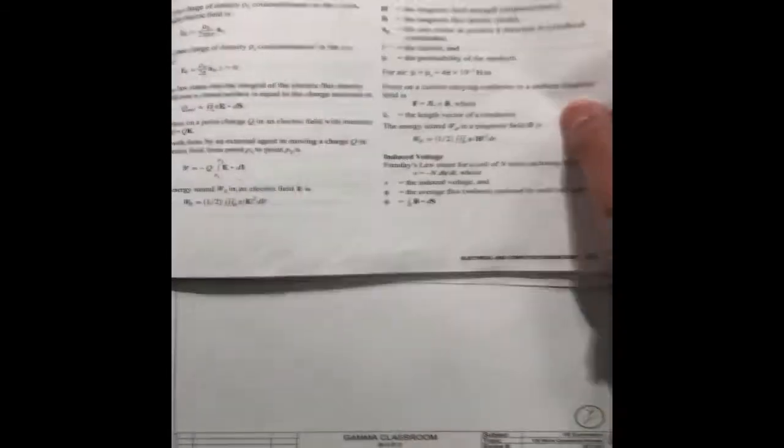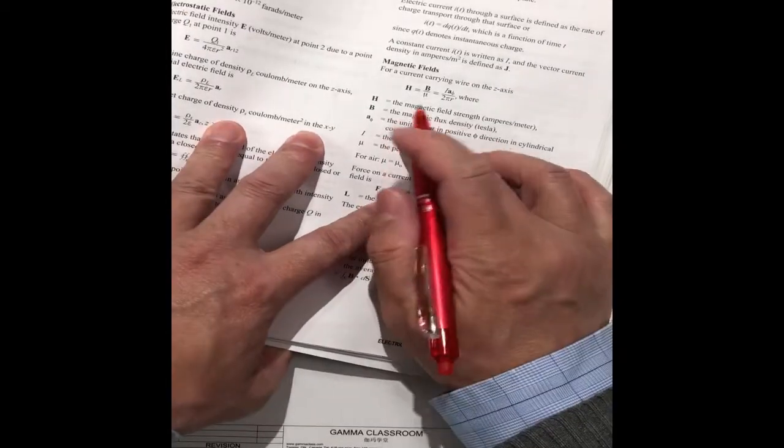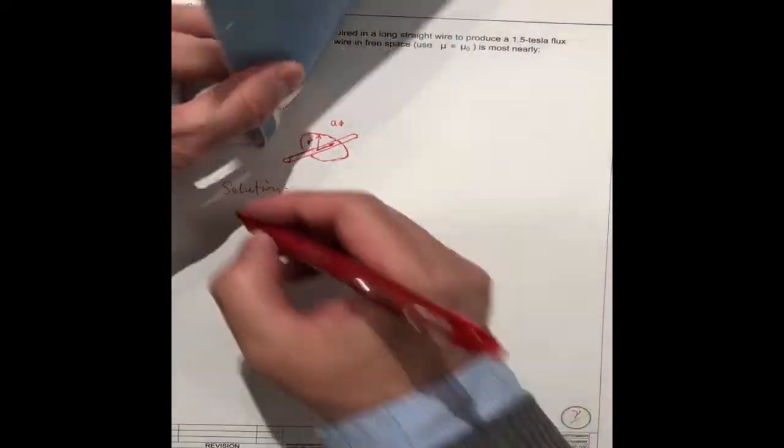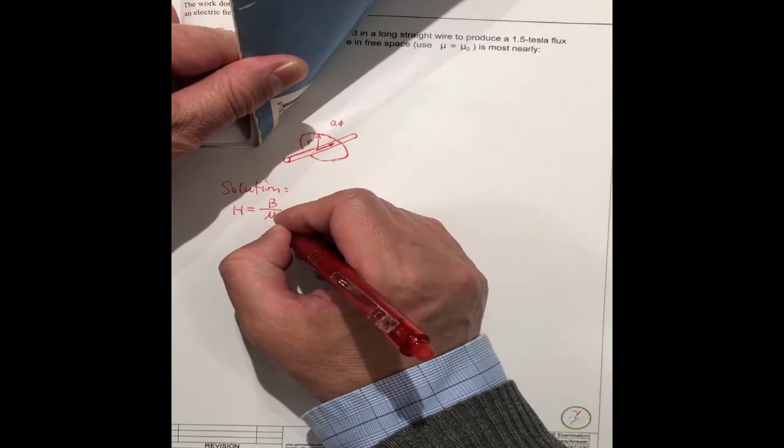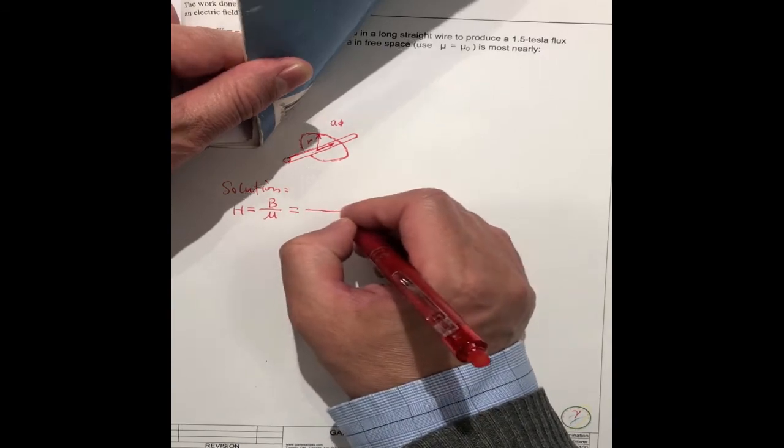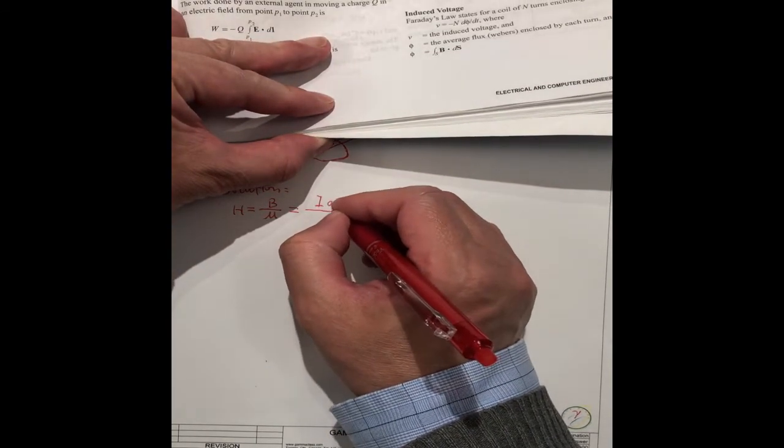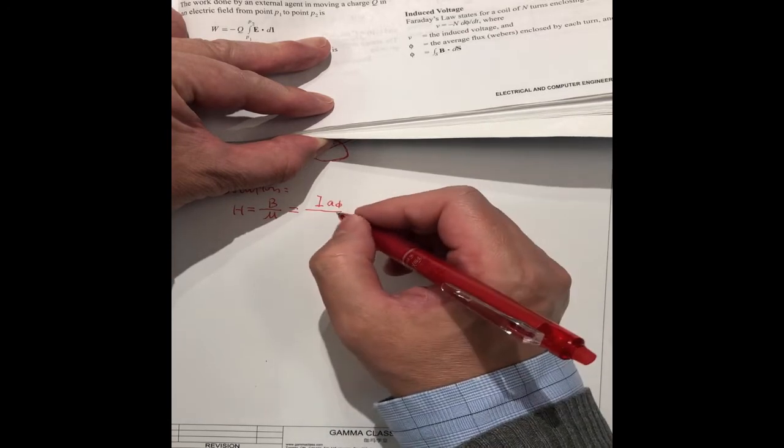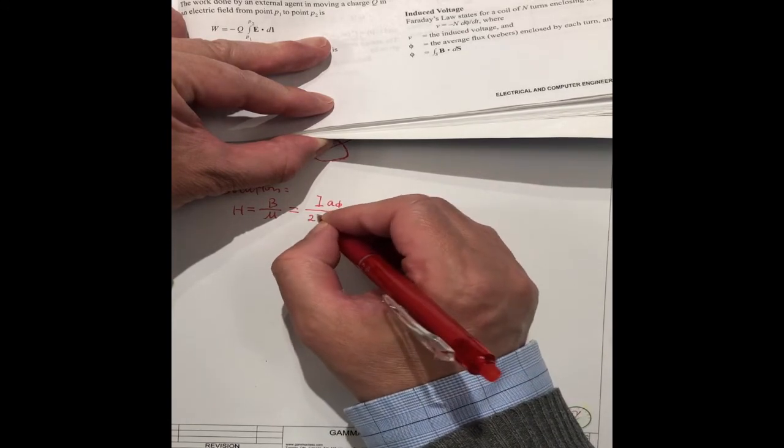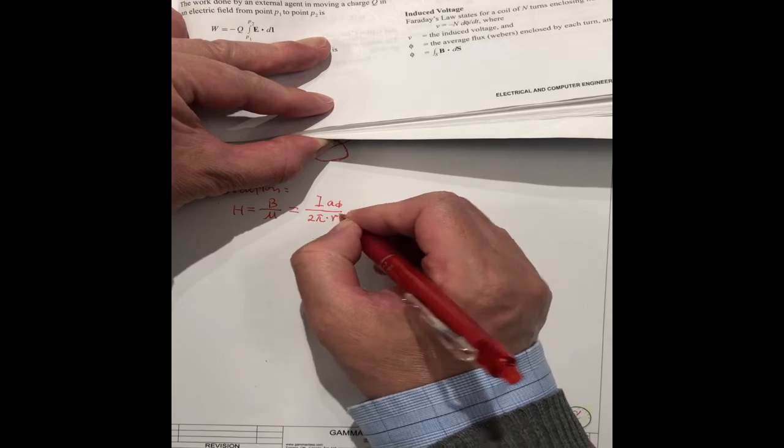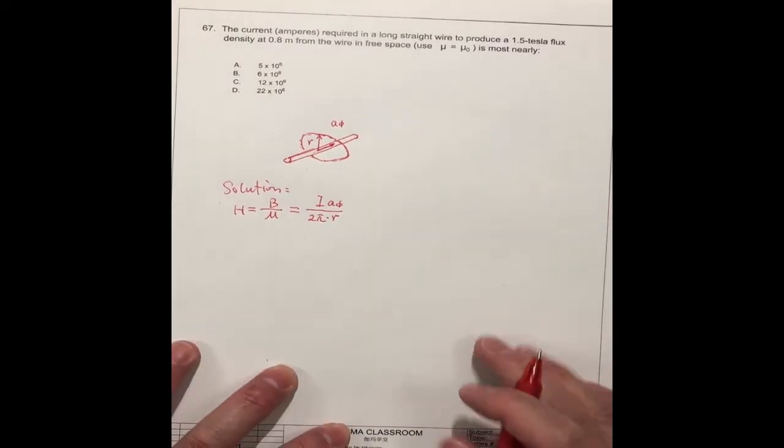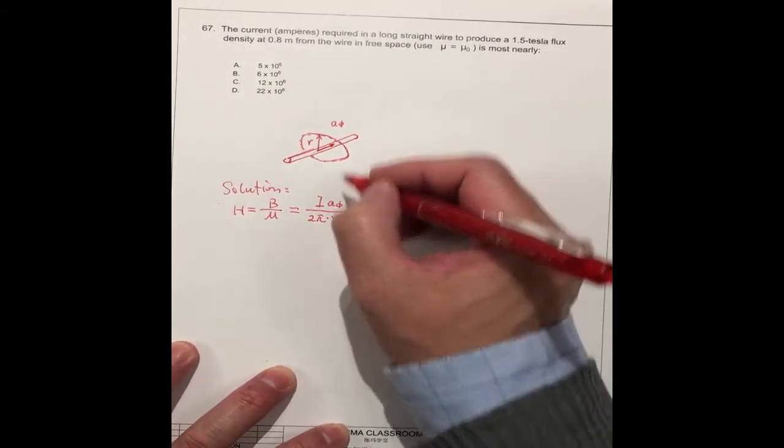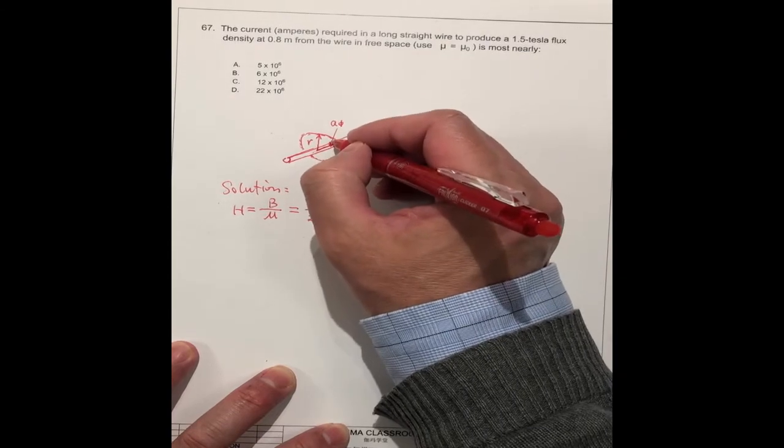We can write down here, H equal to B divided by mu equal to I, A phi, the unit is two pi divided by R. So this A phi is this one, it's the unit. Because the current follows this direction, so we can think this is equal to 1.